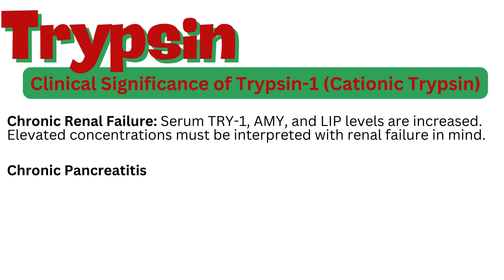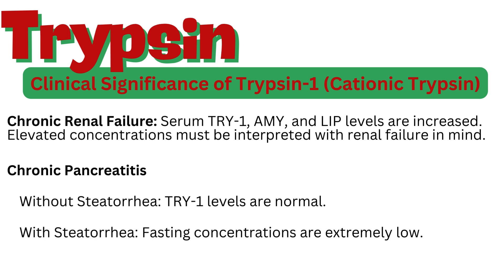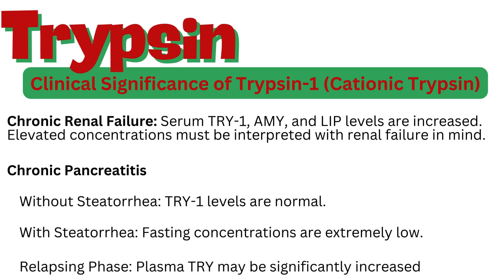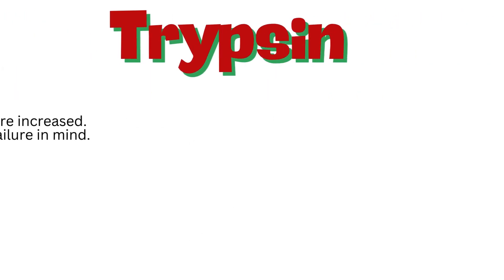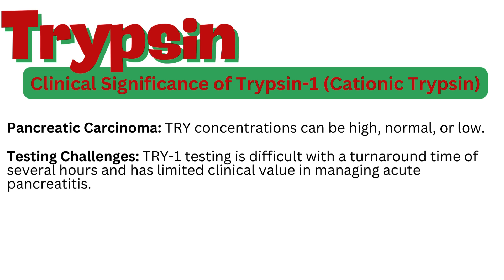In chronic pancreatitis without steatorrhea, trypsin-1 levels are normal; with steatorrhea, fasting concentrations are extremely low. In the relapsing phase, plasma trypsin may be significantly increased. In pancreatic carcinoma, trypsin concentrations can be high, normal, or low. Trypsin-1 testing is difficult with a turnaround time of several hours and has limited clinical value in managing acute pancreatitis.